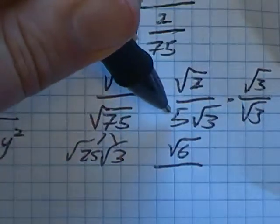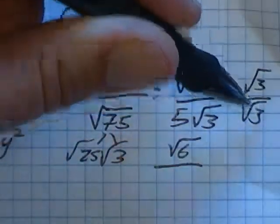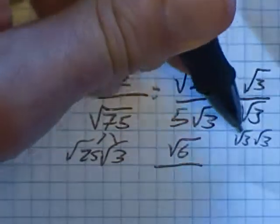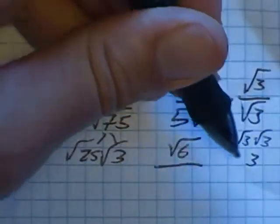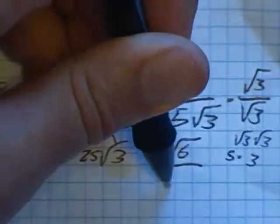Down in that denominator, I have 5 times root 3 times root 3. Root 3 times root 3 is just 3. So I have 5 times 3 in the bottom denominator, which is 15.